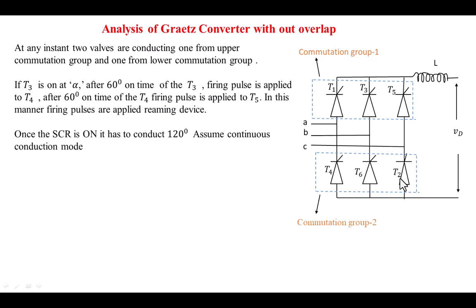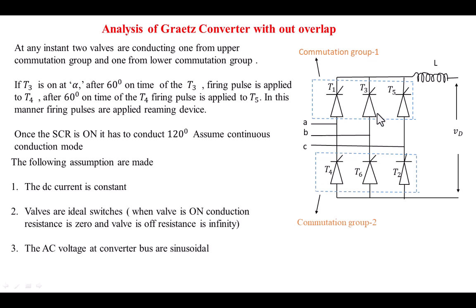Once a valve is on, it has to conduct for 120 degrees for continuous conduction. To analyze the circuit, we have taken the sum of adjacent phase voltages. We are assuming that the DC current is constant. These valves are ideal valves — the voltage drop across the valve is zero. If it is on, the on-state resistance is zero; if it is off, the off-state resistance is infinite. The AC voltage is a pure sinusoid. With these assumptions, we are going to analyze this circuit.